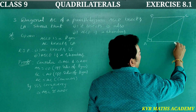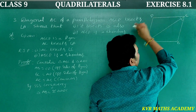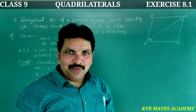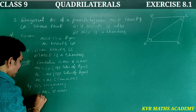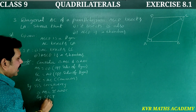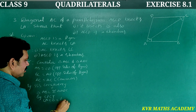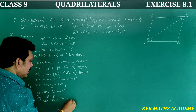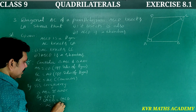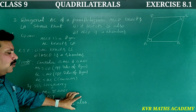By CPCT — corresponding parts of congruent triangles — angle ACB is equal to angle ACD. Therefore, AC bisects angle C also. We have proved the first part.